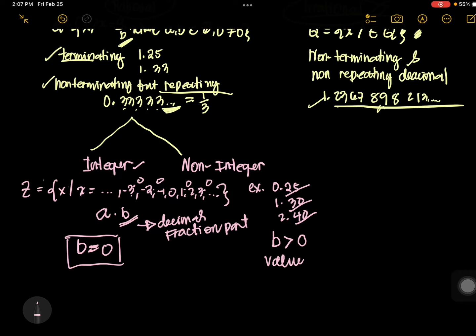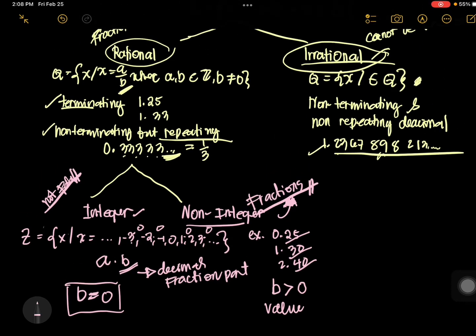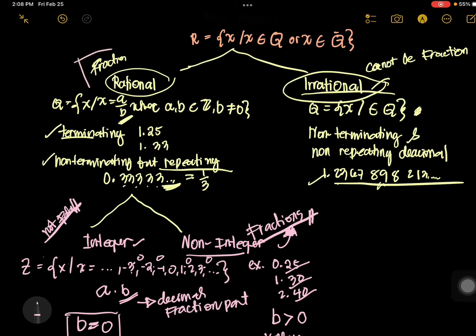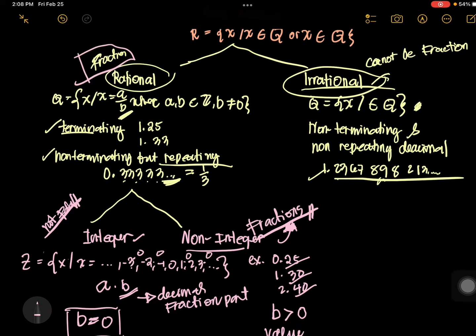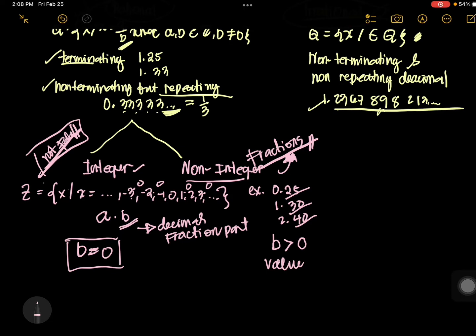Some say that non-integers are fractions. This is false, because if you define non-integer in terms of fractions, does it mean that integers are not fractions? That is already false, because it negates our definition under rational — that rational numbers can be transformed into fractions. Integers can also be transformed into fractions, so we cannot define non-integer using the word fractions.